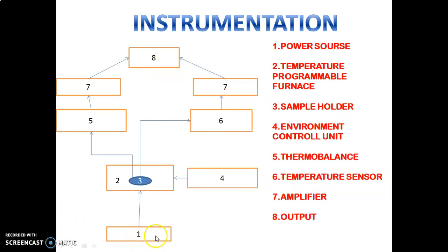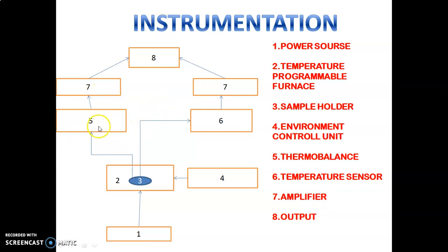There is a power source connected to a temperature programmable furnace. Inside that there is a sample holder in which we place the sample. The environment controller unit provides a suitable environment for the analysis. When power is supplied, the instrument heats according to the given program. The temperature sensor measures temperature regularly, while the thermo balance measures the weight or mass of the substance. Both data are given to the amplifier, which produces the output known as a thermogram.